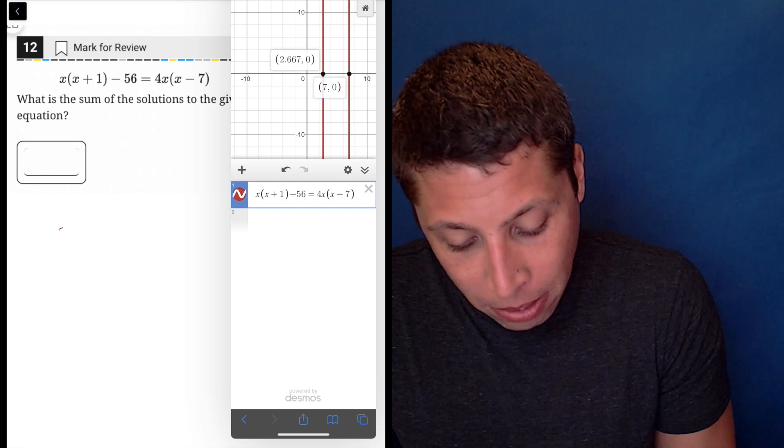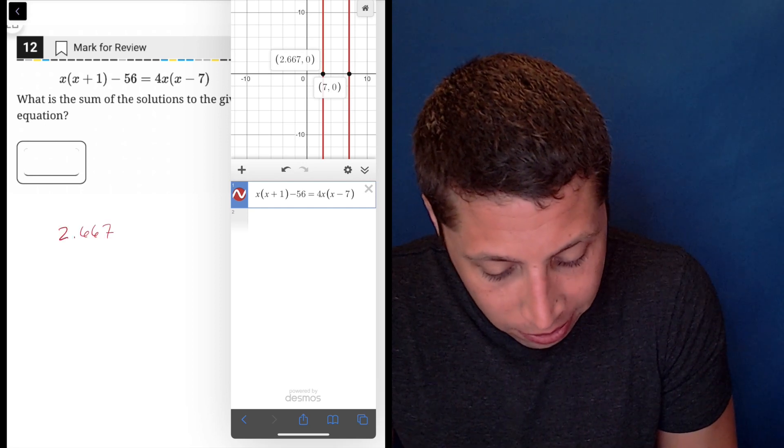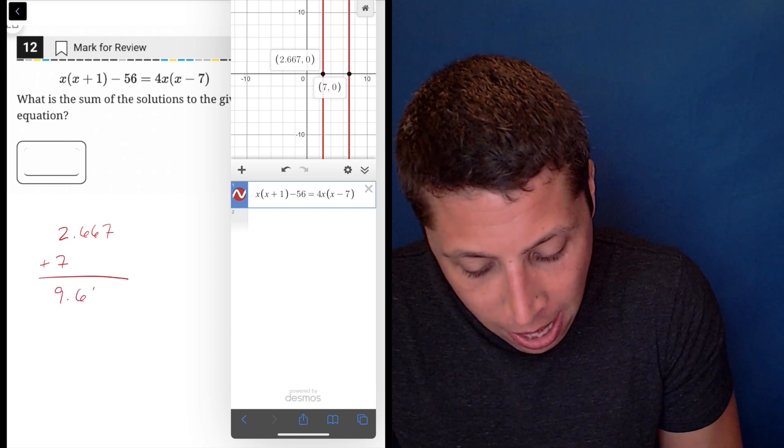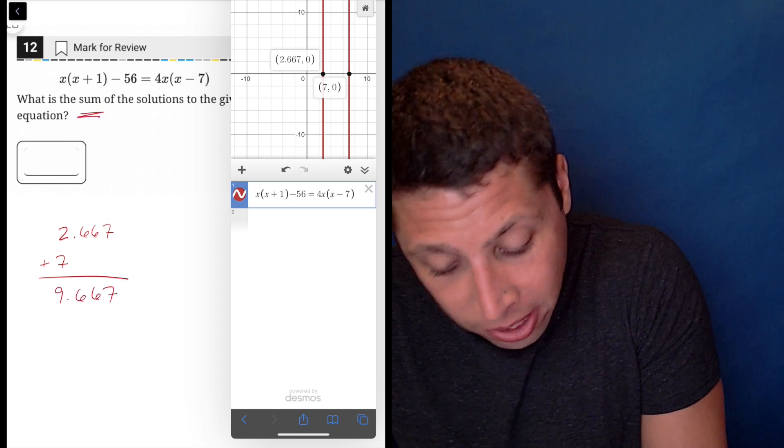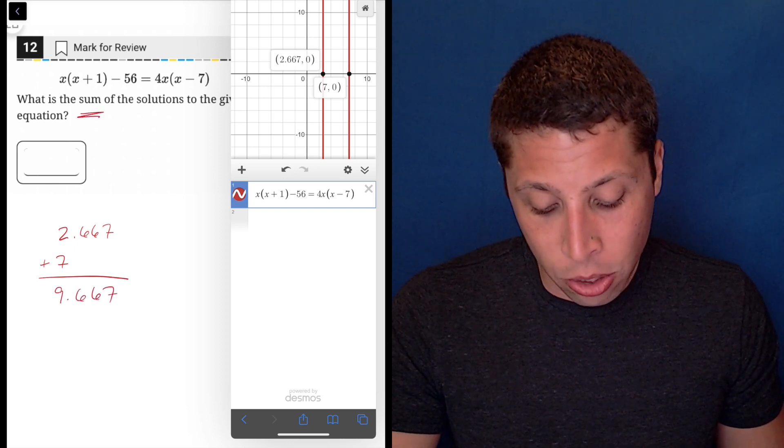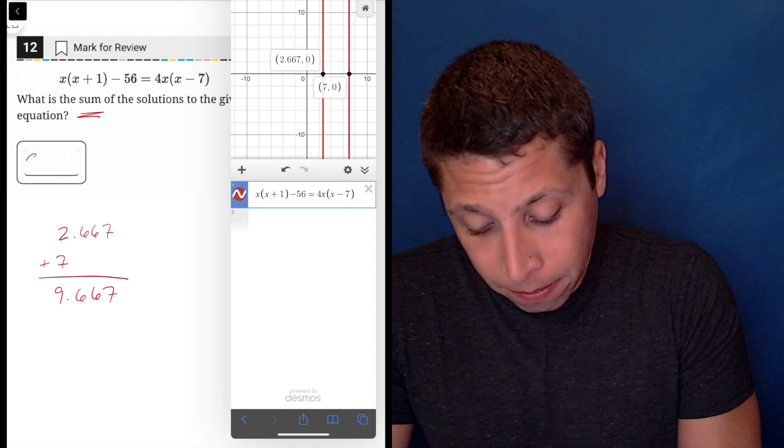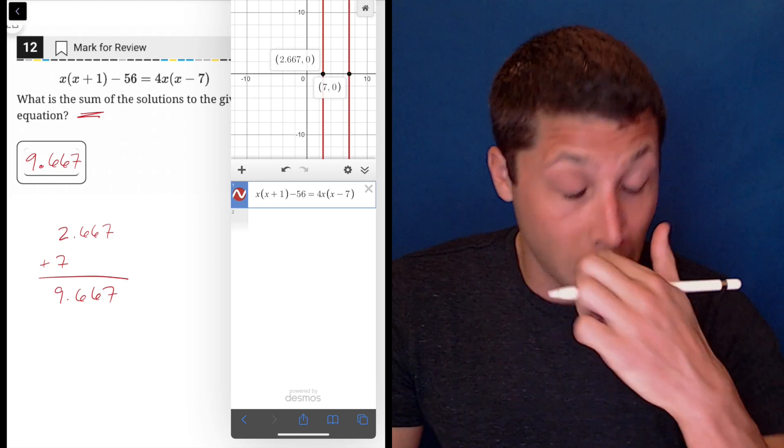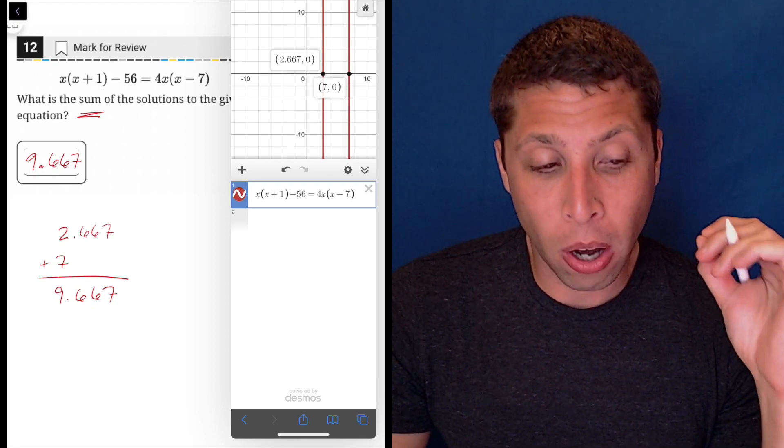So what does that mean for my answer? Well, 2.667 plus 7 is 9.667. They are asking for the sum. So in theory, yeah, this is it. And this would be an acceptable answer, but it makes me really, really nervous because